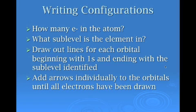Now, how do we write electron configurations? Okay, first of all, we have to figure out how many electrons are in the atom. We have to figure out what sublevel is the element in. So does it finish in the P-block? Does it finish in the S-block? Does it finish in the D or the F? Then, we have to draw out lines for each orbital, beginning with 1s and ending with the sublevel that's identified. So we follow our order, and then we add arrows, if we're doing orbital notation, to the individual orbitals until all the electrons have been drawn. And this is for orbital notation. If we do it for electron configuration notation, we would just write the superscript.